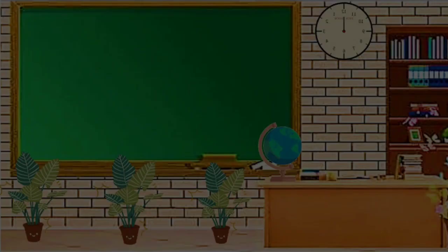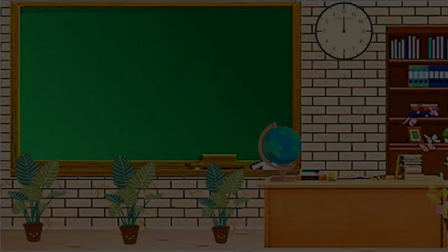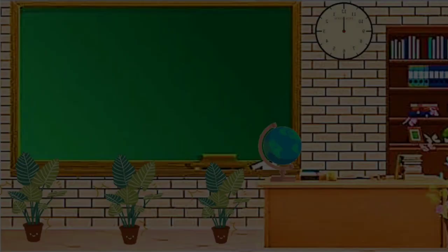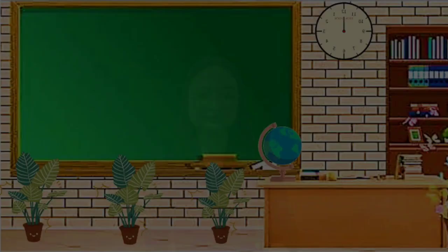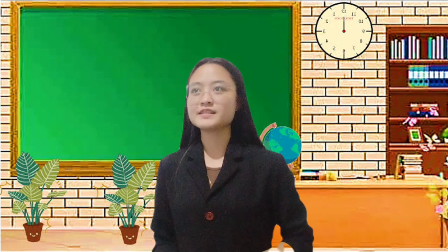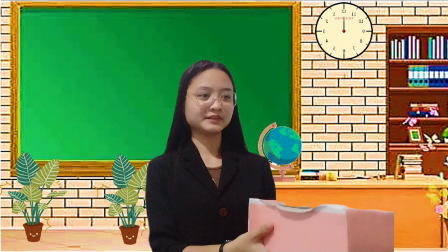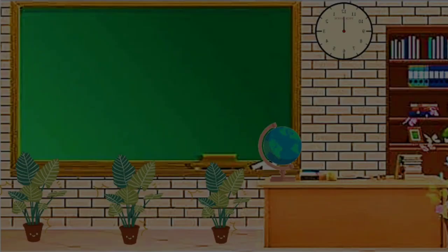Before we start our new lesson, let us first review our previous discussion about polynomials. I have here a box containing different types of polynomials. All you need to do is pick one and identify what type of polynomial it is. I will call you randomly and you will pick one. Garcia, pick one. Cabalyero, pick one. Malyapre, pick one. Ingracia, pick one. Libuon, pick one. Very good class, it seems like you already understand our previous lesson.